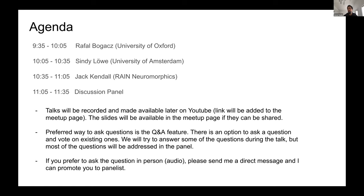The talks will be recorded and made available later on YouTube — I'll add the link to the meetup page. Slides will also be available if the speakers agree; sometimes it's unpublished research. The preferred way to ask questions is through the Q&A feature in Zoom. You can ask a question and vote on existing ones — questions with more votes will rise to the top, increasing the likelihood we can address them. We'll try to answer questions during and after the talks. If you prefer to ask in person, send me a direct message and I can promote you to panelist.